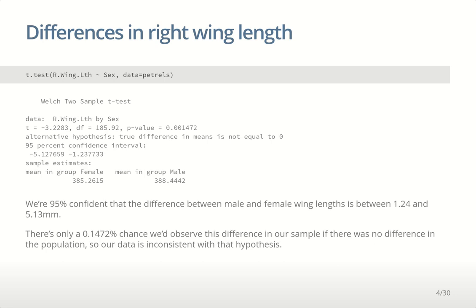There are two ways to assess this: one is with the confidence interval and the other is with a hypothesis test. With the confidence interval, the 95% CI here is for the difference females minus males. So 385.26 minus 388.44 is about minus 3.2, which is why there are negatives on this confidence interval. We can be 95% confident that the difference is between 1.2 and 5.1 units, and that males are larger than females because both numbers are negative. Zero isn't a possibility, so we can conclude there's a difference. The confidence interval allows you to say whether there is a difference and also how large it is.